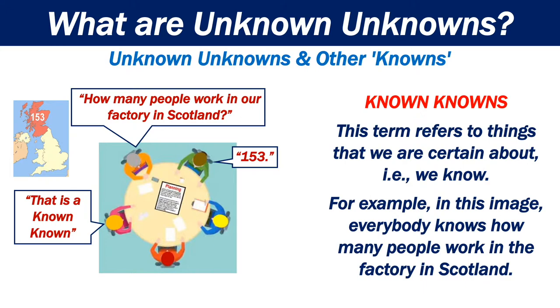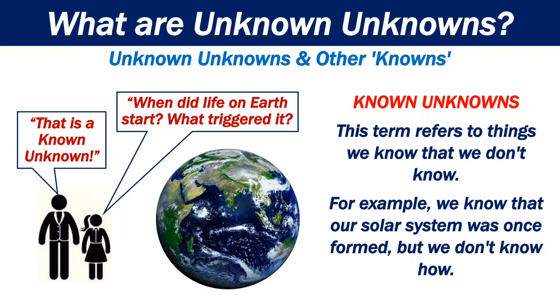Known unknowns. This term refers to things we know that we don't know. For example, we know that our solar system was once formed, but we don't know how.